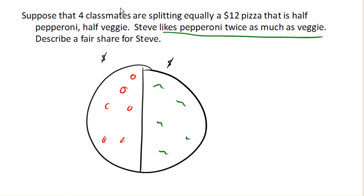We can say, I don't know how much this veggie is worth, but I know that pepperoni is worth twice as much. And if we put them together, they're worth $12. So 3x equals 12, divide by 3, x is $4. And so this side is worth $4, and this side is worth twice as much, is worth $8.